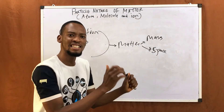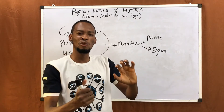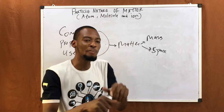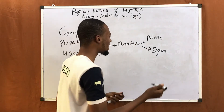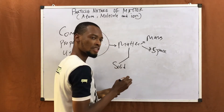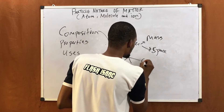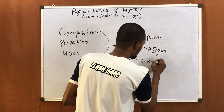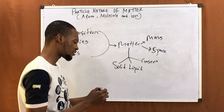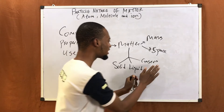And this matter exists in different states. So almost everything you see around in one way or the other belongs to the family of matter in one form or the other. Matter exists in different states — it can be solid, it can be liquid, and it can be in a gaseous state. Now look around the things you see; they are solid, liquid, or gases.